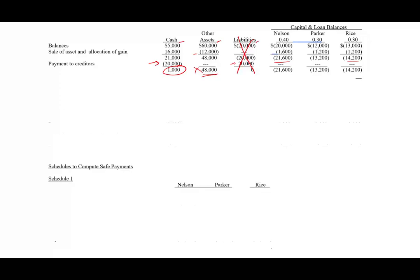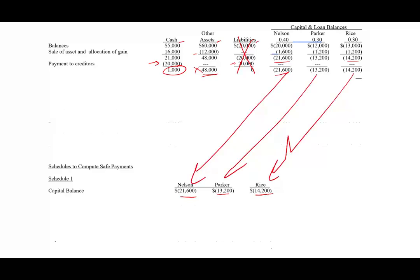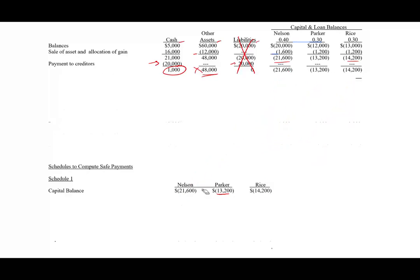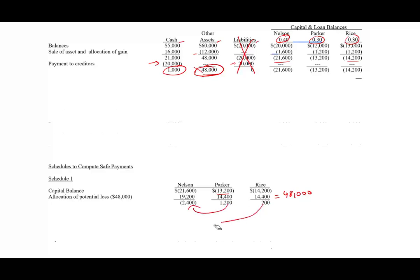Schedule one: here are the balances for Nelson, Parker, and Rice. We allocate $48,000 of losses at 40%, 30%, and 30% — giving Nelson $19,200, Parker $14,400, and Rice $14,400. After allocation, only Nelson survives with a credit balance. Parker has a $1,200 debit balance and Rice has a $200 debit balance. We close those debit balances to Nelson — Nelson absorbs $1,400 — bringing Parker and Rice to zero.